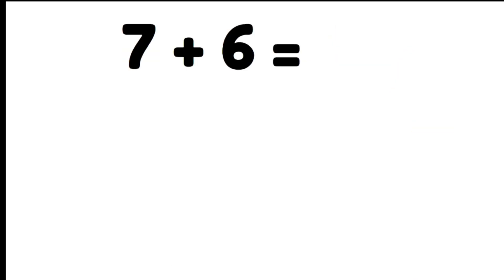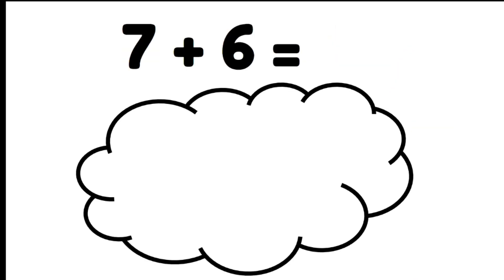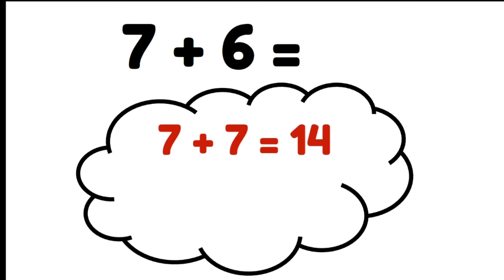Let's do seven plus six. This time we're going to use seven as our double — double seven gives us fourteen. But the number six in our problem is one less than seven, so we're going to have to take one away.